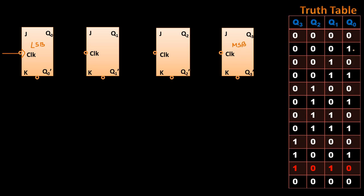Q0 is the least significant bit and Q3 is the most significant bit, as shown on the screen. Q0, the LSB, toggles for every clock pulse — initially it's 0, then for the next count it goes to 1, then back to 0, then 1, and so on. It alternates between 0 and 1, which is achieved with a toggle operation. During every negative transition of the clock pulse the first flip-flop output will toggle.